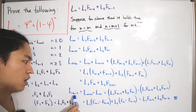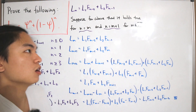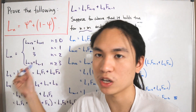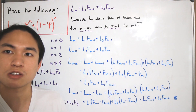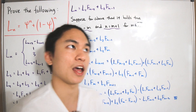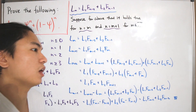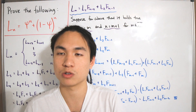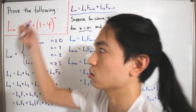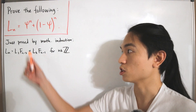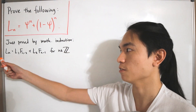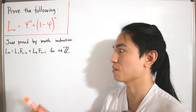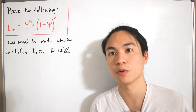We also verified the base cases n=3 and n=4. Therefore, by mathematical induction, the formula L_n = L_1 · F_{n-2} + L_2 · F_{n-1} holds for every integer n. This recurrence relation is what we will use to progress toward the main proof.